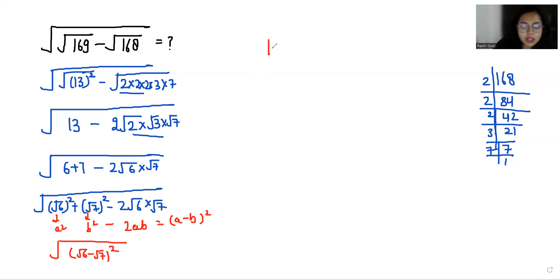Now with the help of the identity square root of a minus b whole square, we can write it as absolute a minus b. So it becomes absolute under root 6 minus root 7, which gives us negative answer. So we'll take negative outside root 6 minus root 7, and the final answer is root 7 minus root 6.